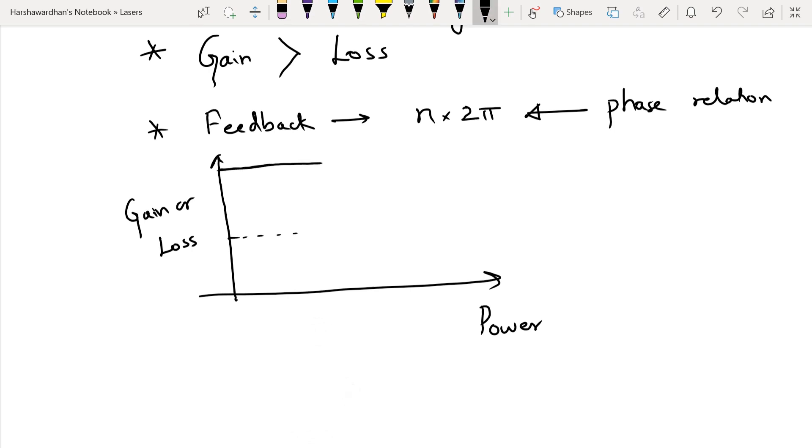And there is a level of loss which you need to contend with in the system. So what happens is that as the gain is very large you get a large output, but then beyond a certain point as the power increases the gain saturates and then there is a time at which the gain will actually become equal to the loss. And this is essentially the level at which steady state power is generated.